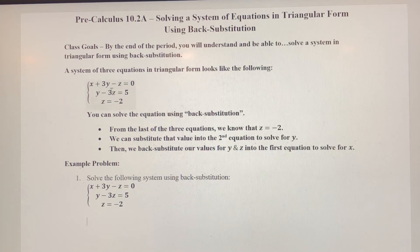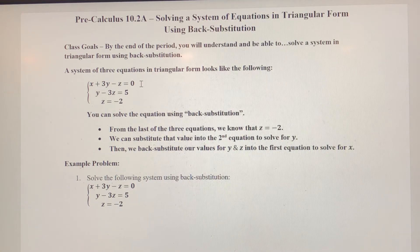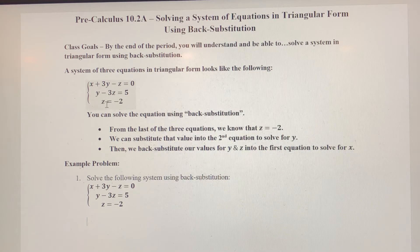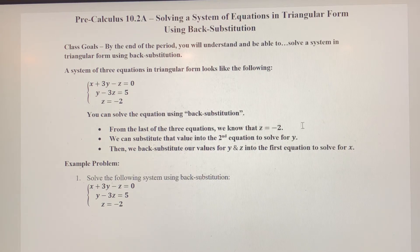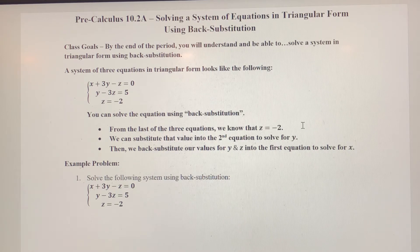So if we look at the system again, now we've got three equations instead of two, like we had in the previous section. If you'll notice the third equation, we already know the value of one of the variables. The third equation tells us that Z has a value of negative two.